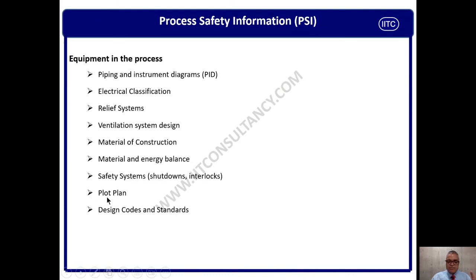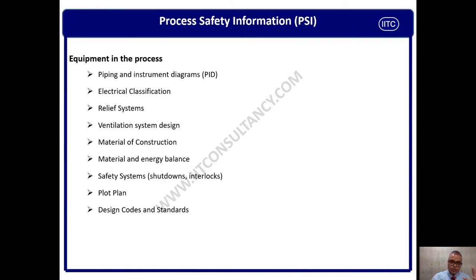Plot plan — every person working in the plant must know the plant layout, the plot plan, so that he or she knows what are the different hazards at which location — which is the red area, which is the amber area, yellow area, green area, what is the PPE zone. A well-established plot plan should be there, it has to be approved and updated on a regular basis in case of any change.